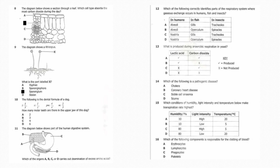Ten: The following is a dental formula of a dog: I 3/3, C 1/1, PM 4/4, and M 2/3. How many molar teeth are there in the upper jaw of this dog? The answer is 4. Eleven: The diagram below shows part of the human digestive system. Which of the organs A, B, C, or D carries out the deamination of excess amino acids? The answer is B, which is the liver.